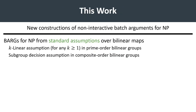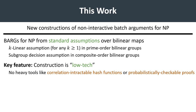In this work, we give the first construction of batch arguments for NP from standard assumptions on bilinear groups. We can instantiate our approach with either the subgroup decision assumption on composite order bilinear groups, or from the standard k-linear assumption over prime order groups. A key feature of our construction is that it gives a direct construction that departs heavily from previous techniques in the study of succinct arguments.